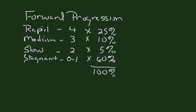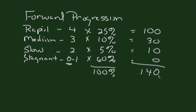Then you multiply these values together. 4 times 25 would give us a value of 100. 3 times 10 would be 30. 2 times 5 would be 10. And 0 times 60, of course, is 0. And this would give us a total value of 140. The normal value that we are looking for is greater than or equal to 100. So this individual would have a normal forward progression.